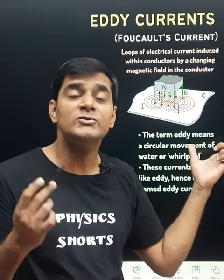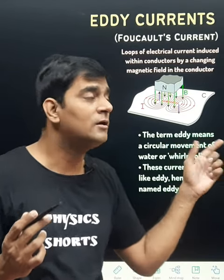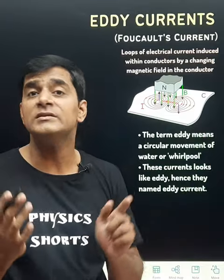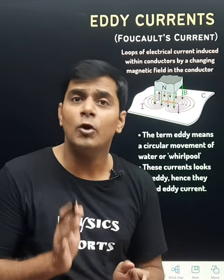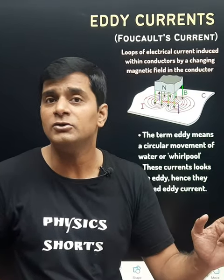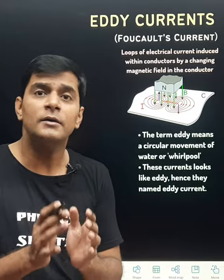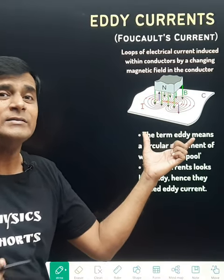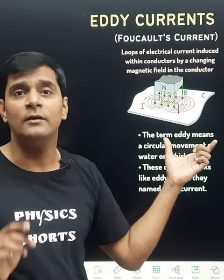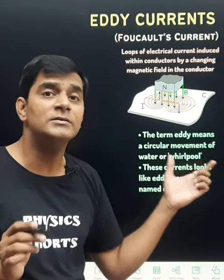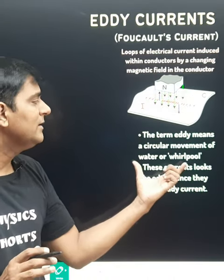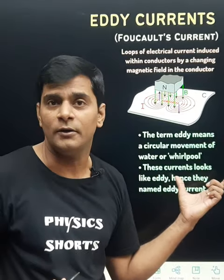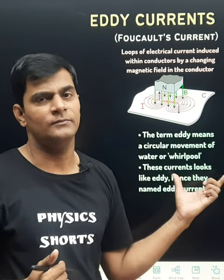Whenever the magnetic flux associated with a conducting sheet or a conducting block changes with time, then due to the phenomenon of electromagnetic induction, some current induces in that sheet or block. This current is called the eddy current. It is called 'eddy' because the shape of the current is like a whirlpool or the eddy produced in water.